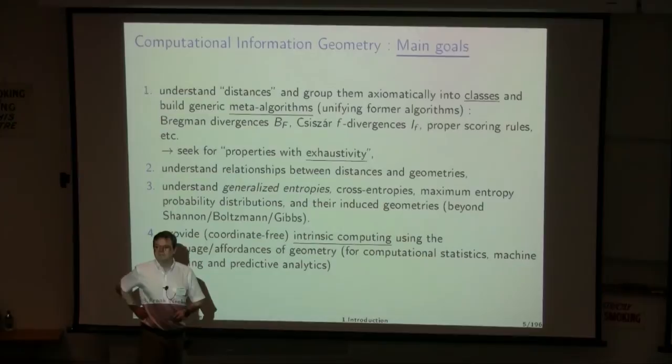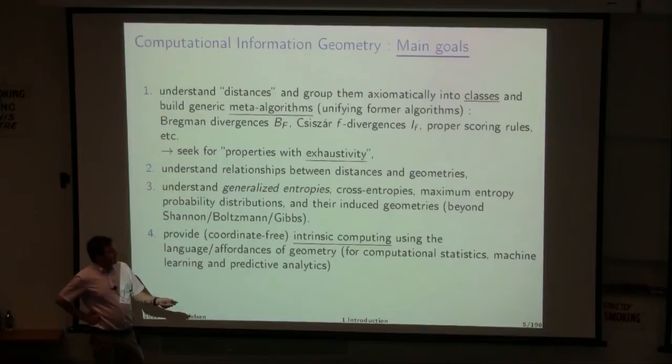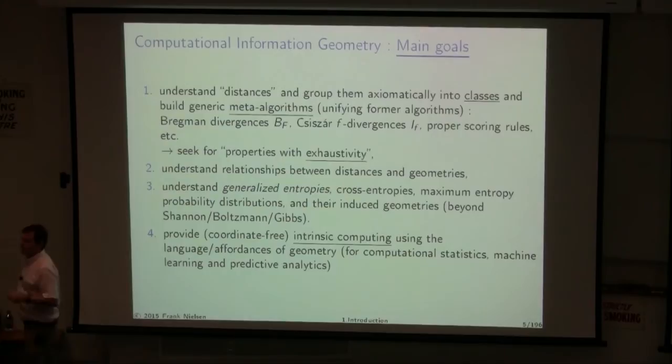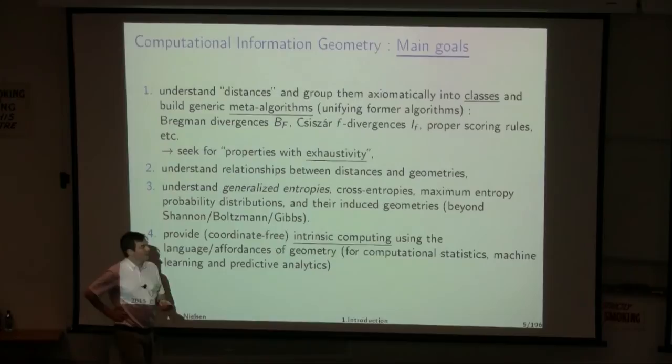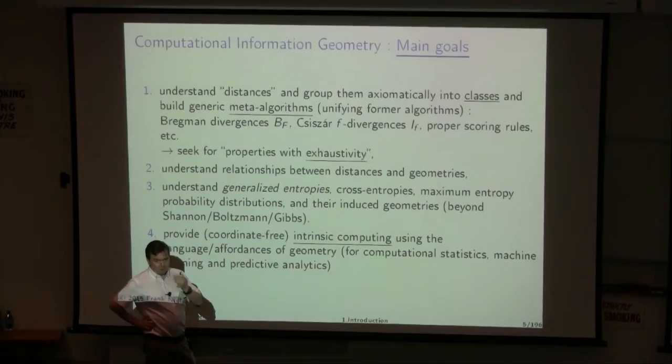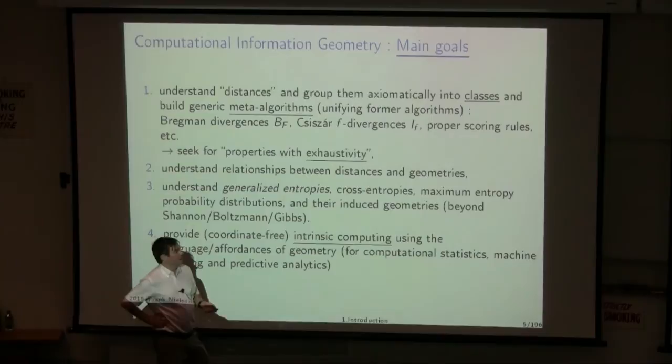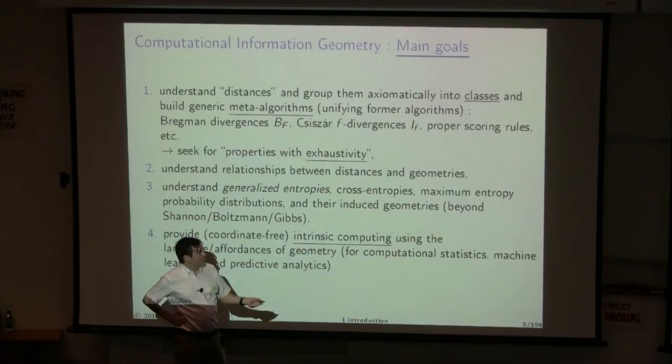The second goal is to understand the relationship between distances and geometries — it's not one-to-one. We want to better understand what geometric space is realized from a given distance. The third goal is to understand what entropy, cross-entropy, and relative entropy are, going beyond Shannon and Kullback-Leibler divergence. We will look at generalized entropies, their properties, and their induced geometries.